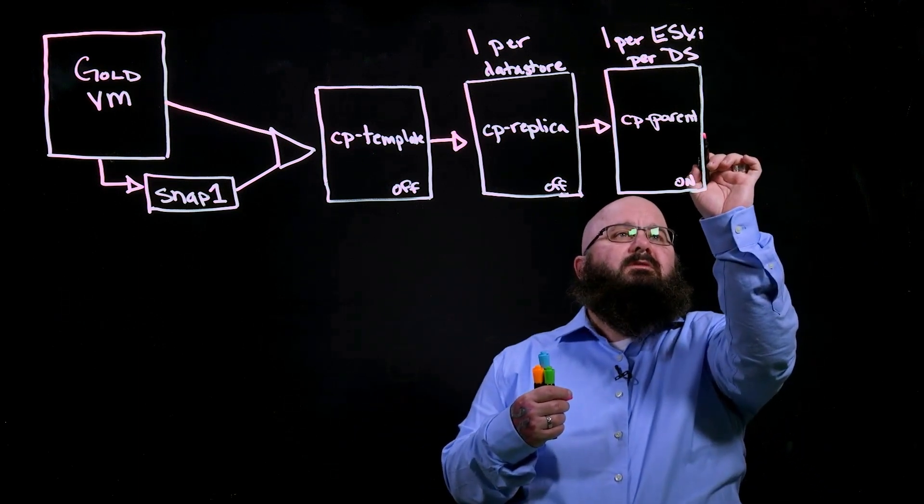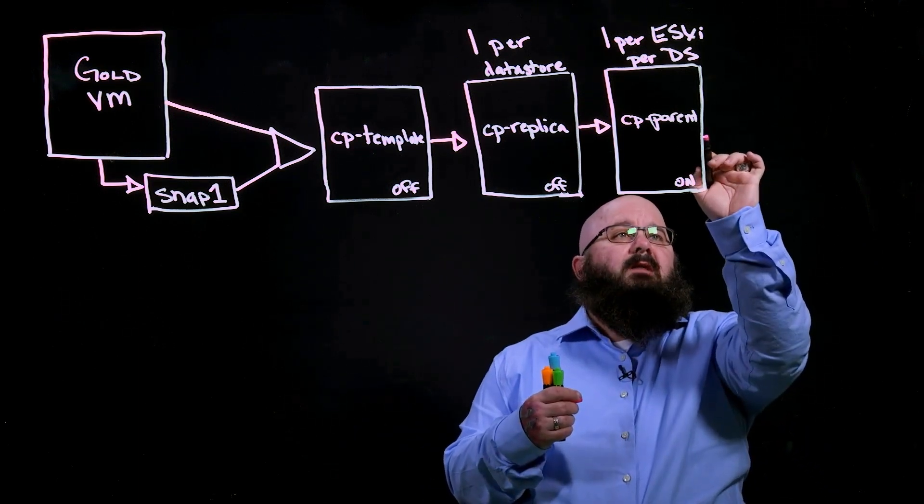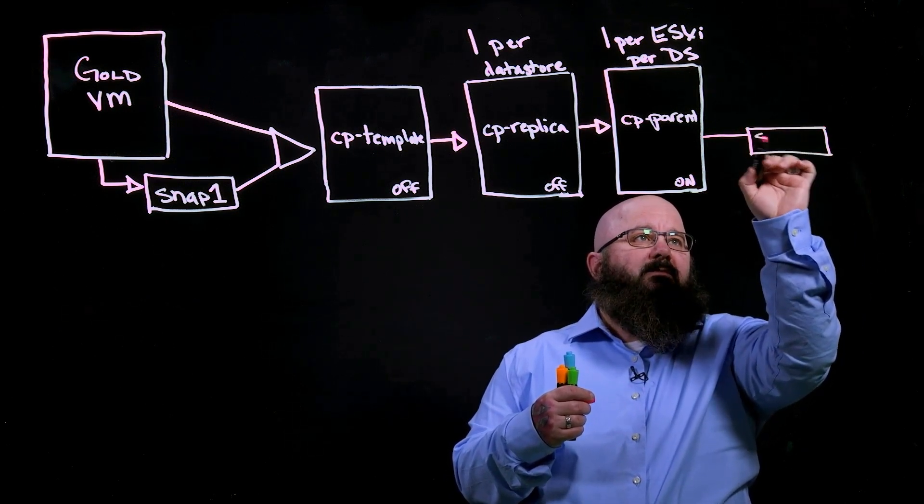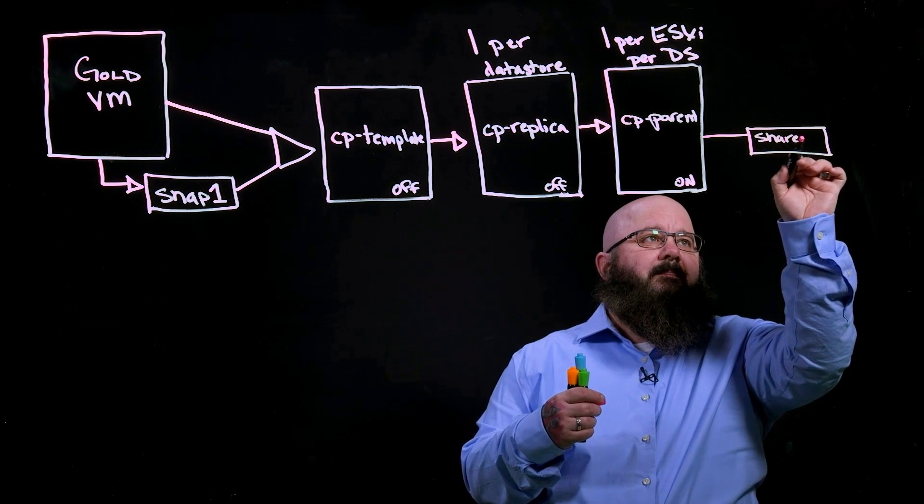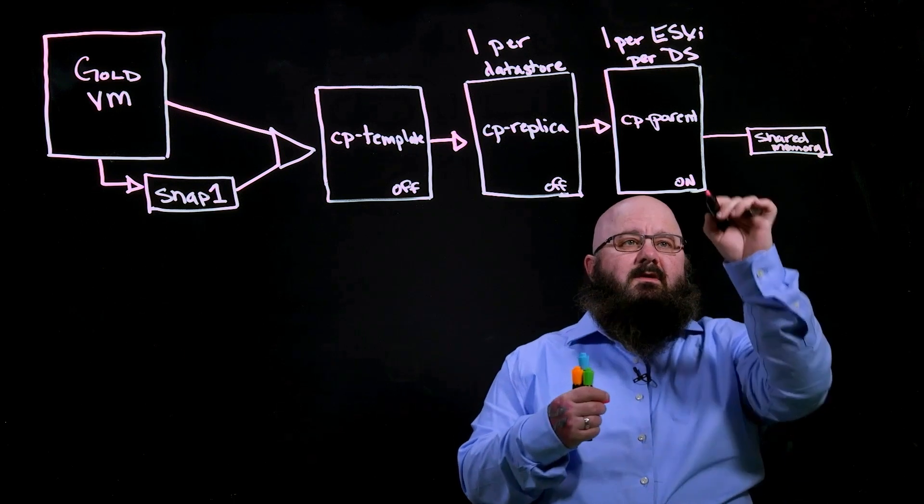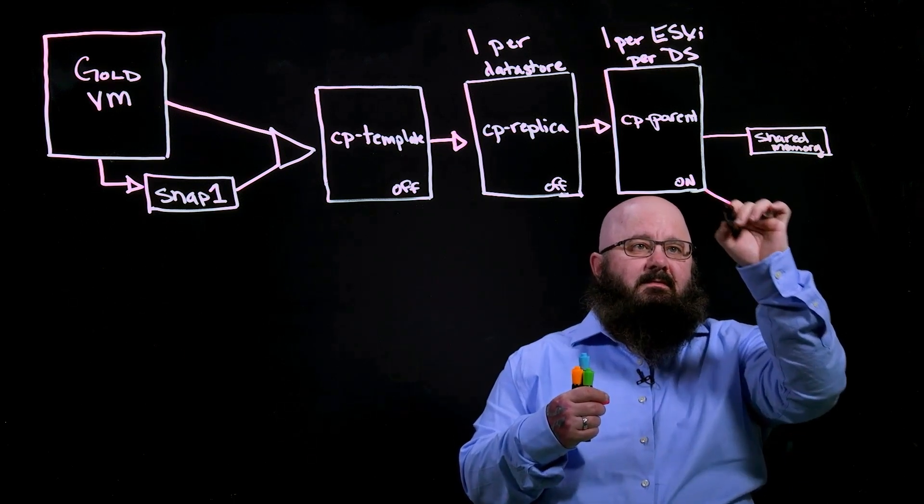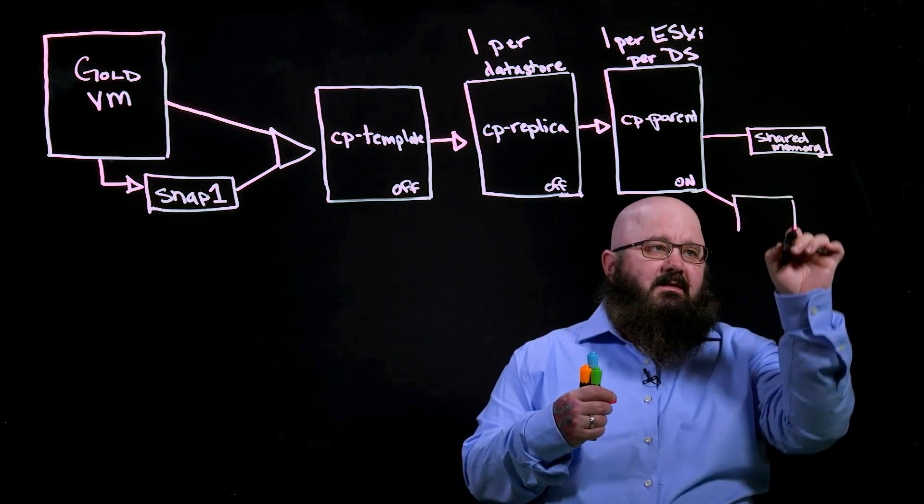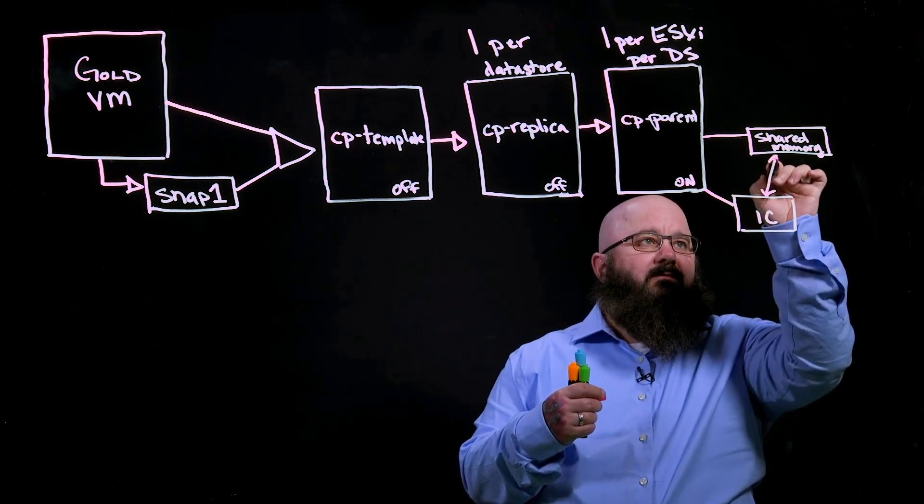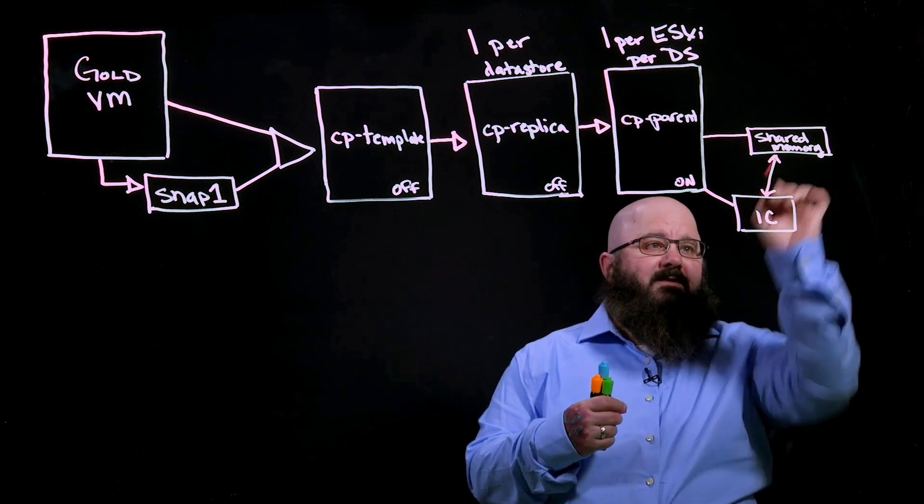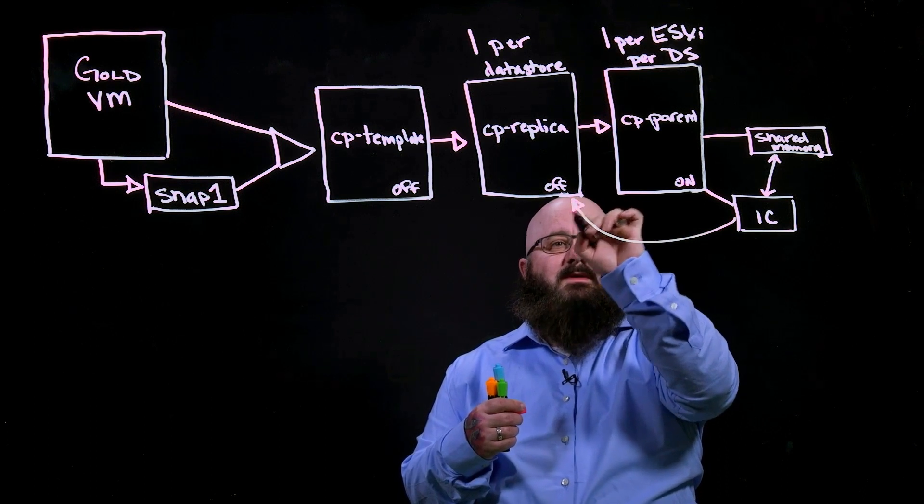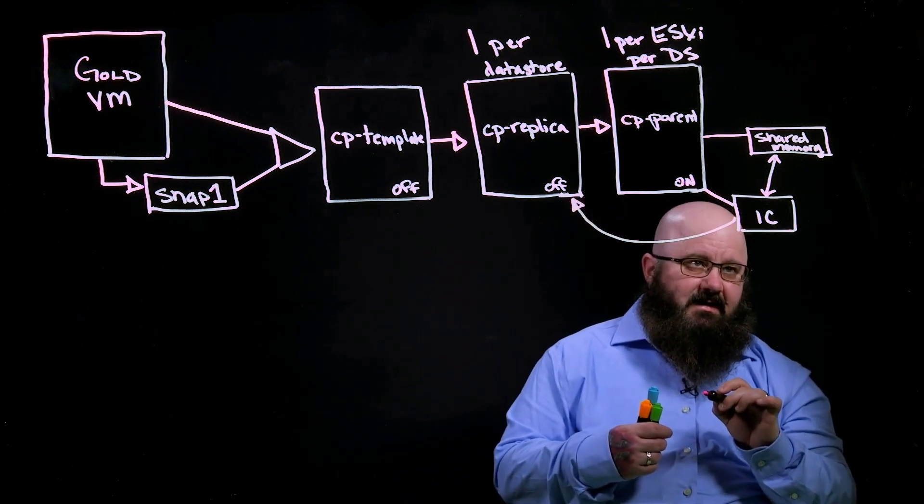One of the things that the parent will do, because it's powered on, it'll actually go ahead and create a sort of shared memory location. So this will be our shared memory. And then it will fork off of itself my instant clone. I'll just call it IC. The instant clone will read what it needs to from the shared memory. And it will even read from the replica any files that it might need to have access to.